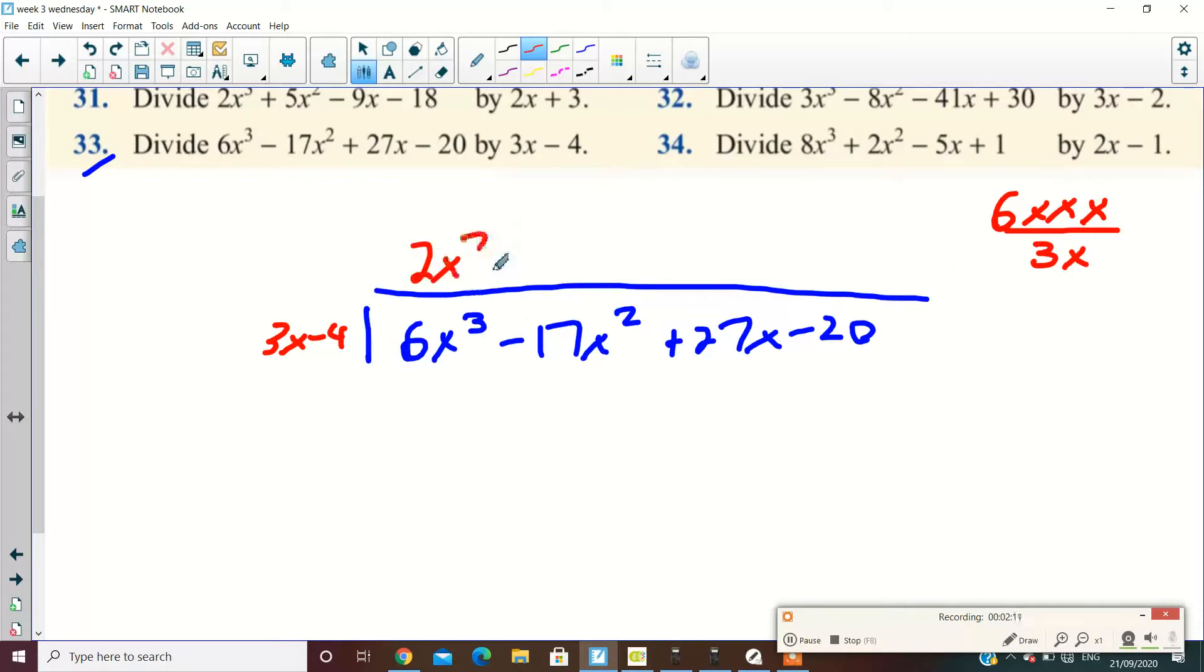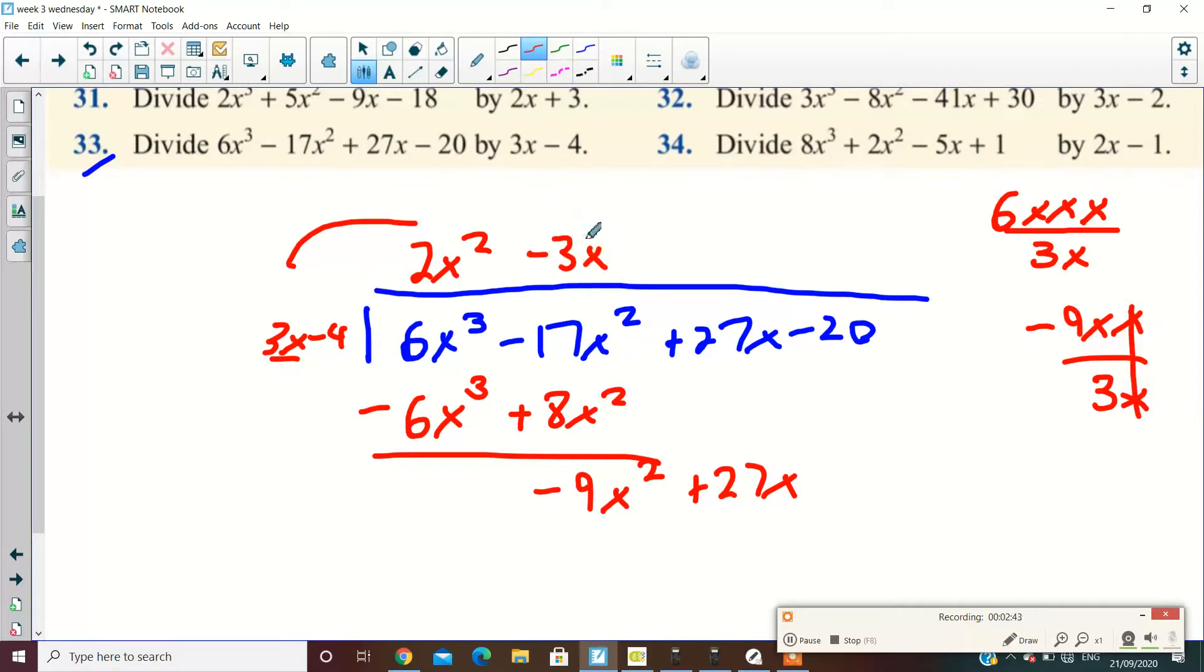2x squared. Multiply it out and what do you get? Yeah. Minus 8x². Change the signs. Minus 1 plus. What's 17? Minus 17 plus 8. Minus 9x². Now, minus 9x² divided by 3x. So minus 9xx divided by 3x will get me what? Minus 3x. Multiply it out. Minus 3x by minus 3x.